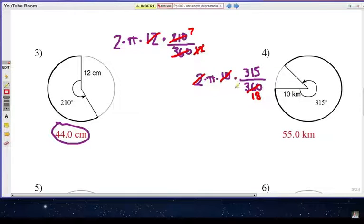And let's go ahead and multiply 3.14 times 315, and then divide that answer by 18. And it should work out to be 55.0 kilometers.